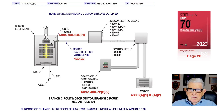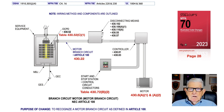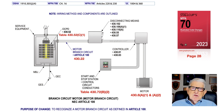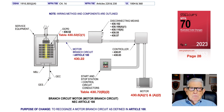This illustration deals with branch circuit motor — motor branch circuit — in accordance with Article 100, on page 28 of the NEC. The purpose of this change was to recognize a definition for motor branch circuit so that this term could be used in Article 430 mainly. Notice in the illustration you have Table 430.252 C1, which deals with overcurrent protection.